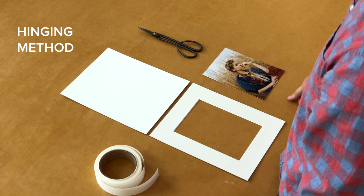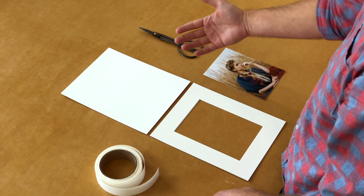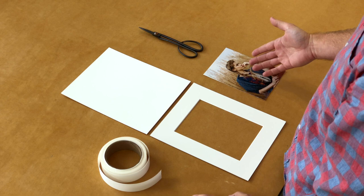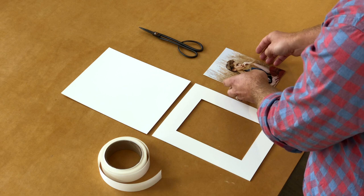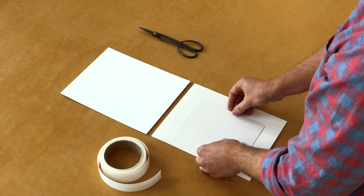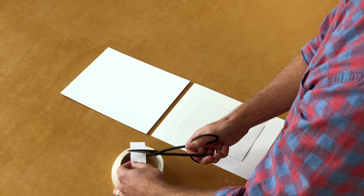So this would just be called the hinging method and you're just hinging it at the top. So all you need is your back mat, your front mat, your linen hinging tape, scissors, and the print. So start out by turning your front mat over again. Taking your print, also flipping it over. And you'll secure this the same way that we did earlier with the corners. So you do one in the top left and one in the top right.